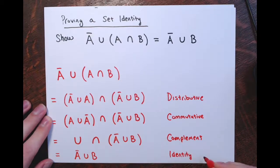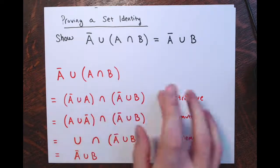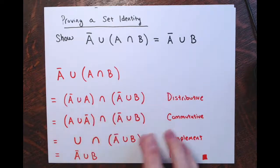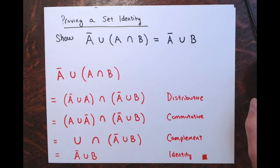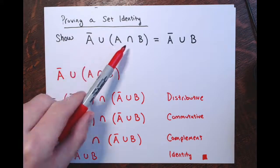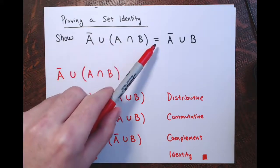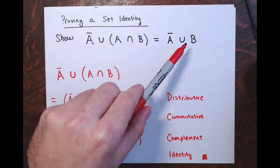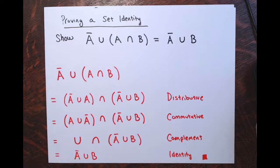This is equivalent to just the complement of A union B, because any set intersected with the universal set will be that set — that was one of the identity laws. Done. This is kind of like a proof: statement, reason, statement, reason. I've shown that the set on the left is equivalent to the set on the right, so no matter what sets A and B are, they would be the same and have the same elements.